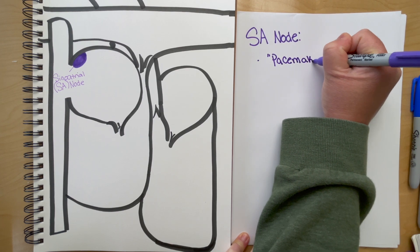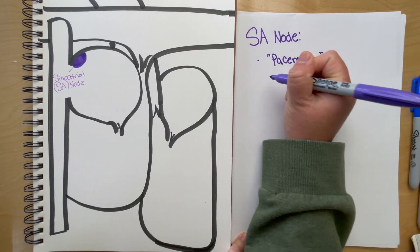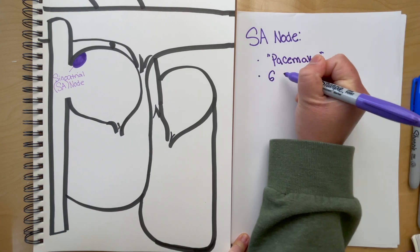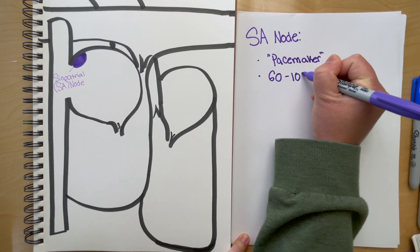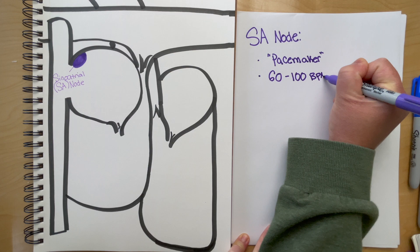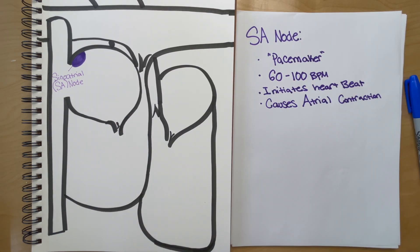The SA node is known as the pacemaker of the heart, not only because it initiates the heartbeat, but also because it regulates the heart rate. The heart rate refers to beats per minute. The SA node causes the heart to contract at 60 to 100 beats per minute.